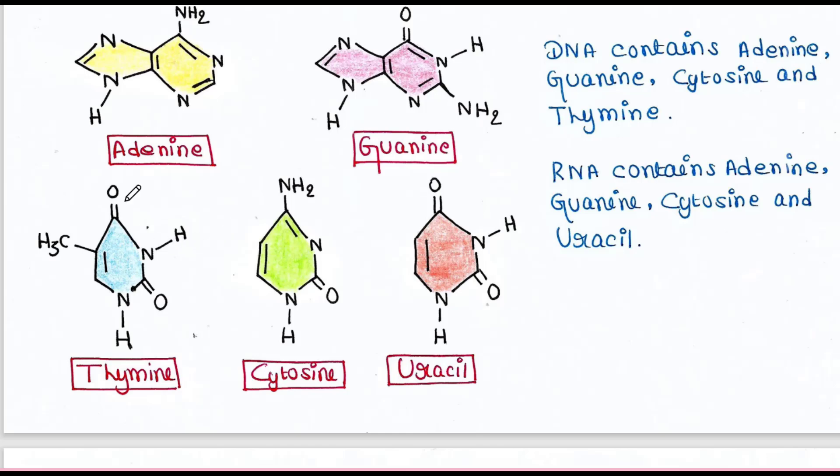So DNA contains adenine, guanine, cytosine, and thymine, whereas RNA contains adenine, guanine, cytosine, and uracil. That means adenine, guanine, and cytosine are common in RNA and DNA. In DNA, instead of uracil, thymine is present, and in RNA, instead of thymine, uracil is present.